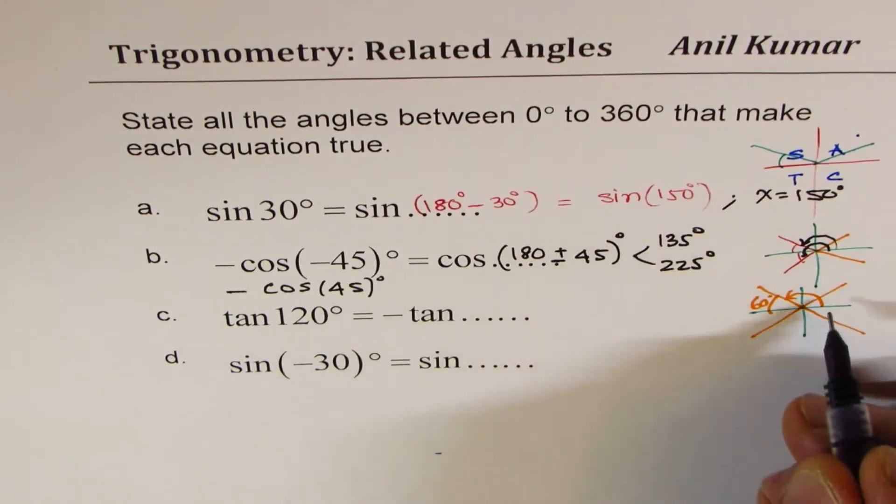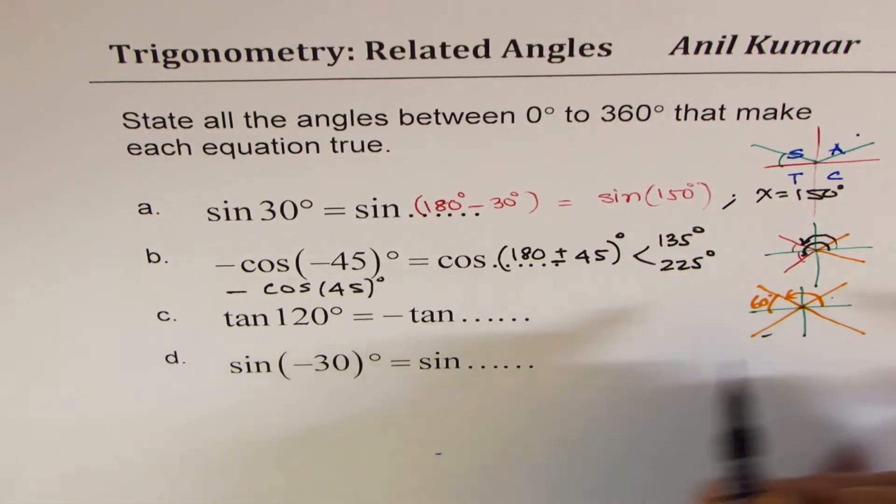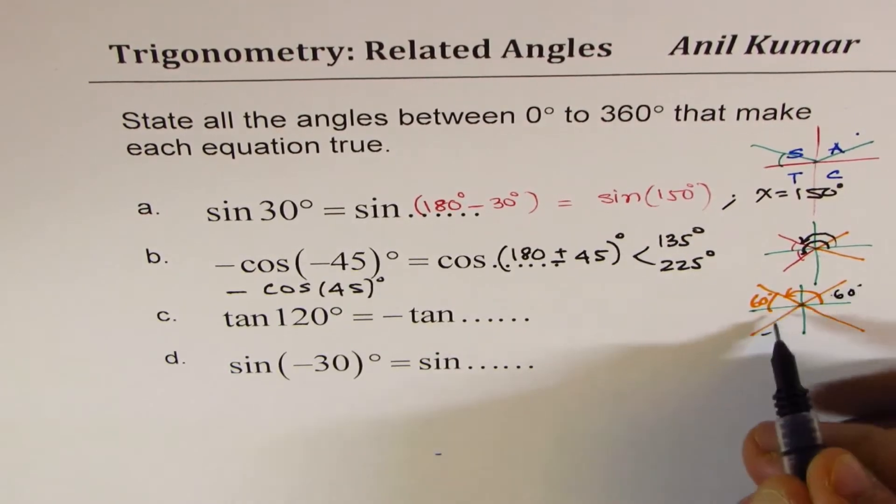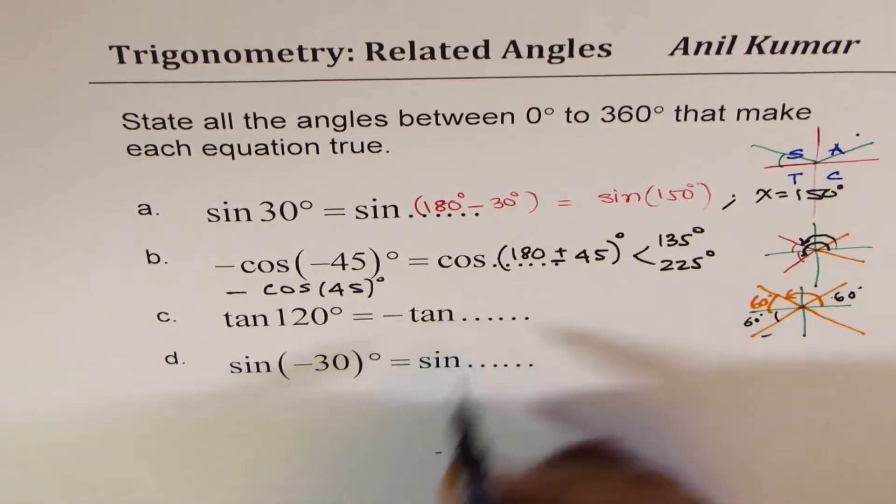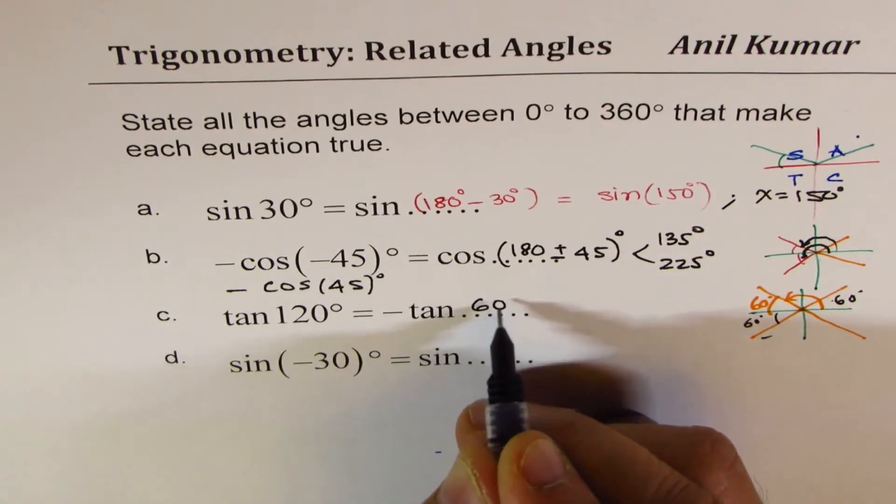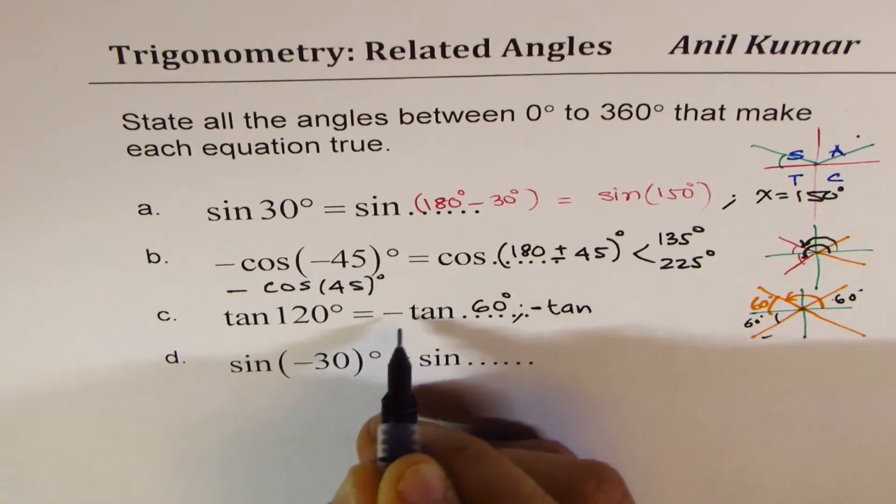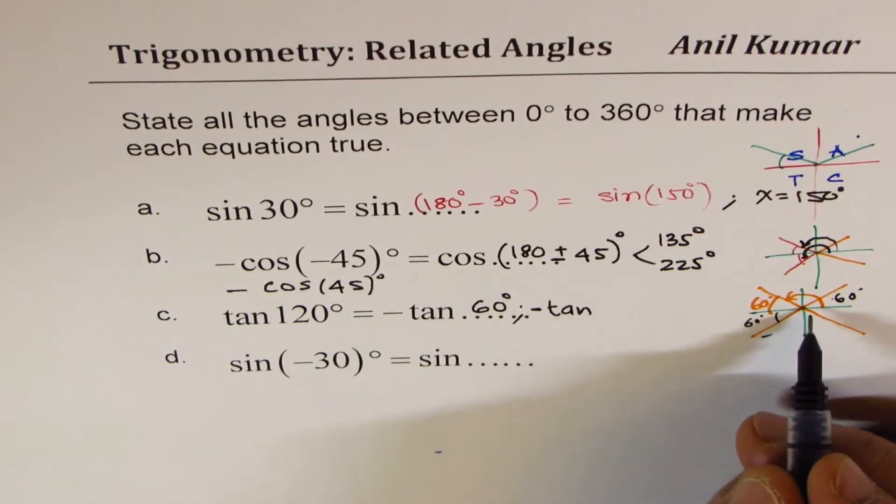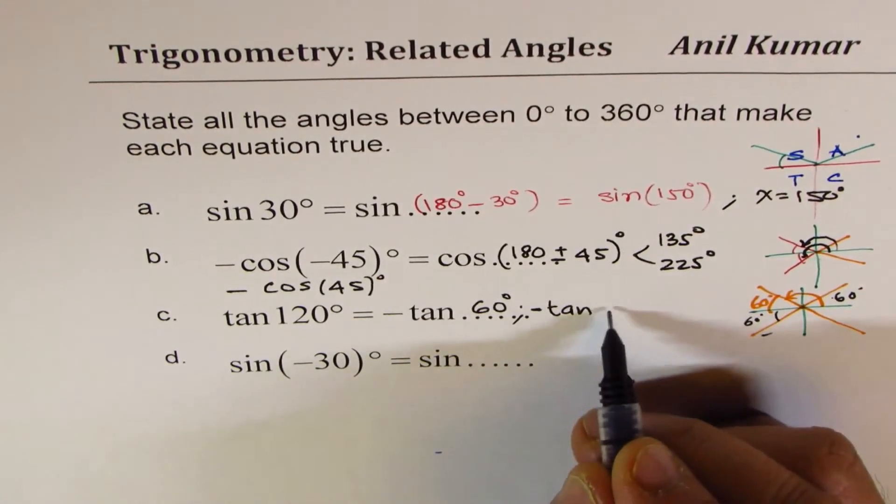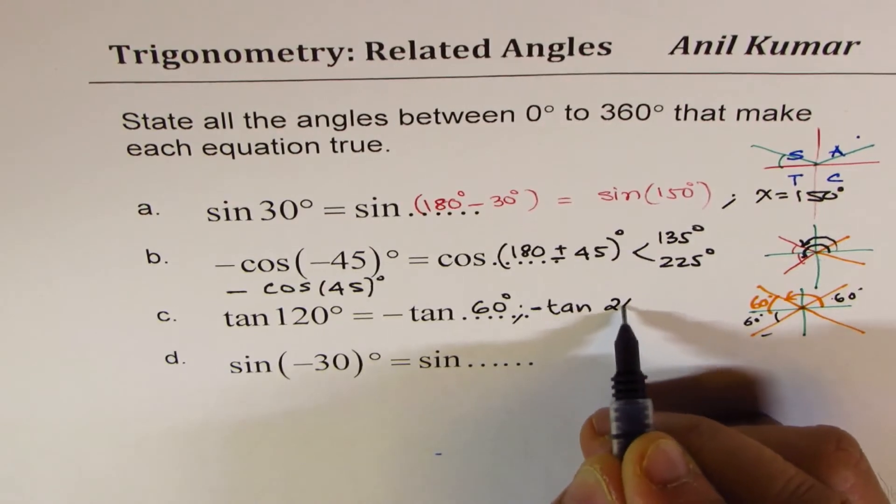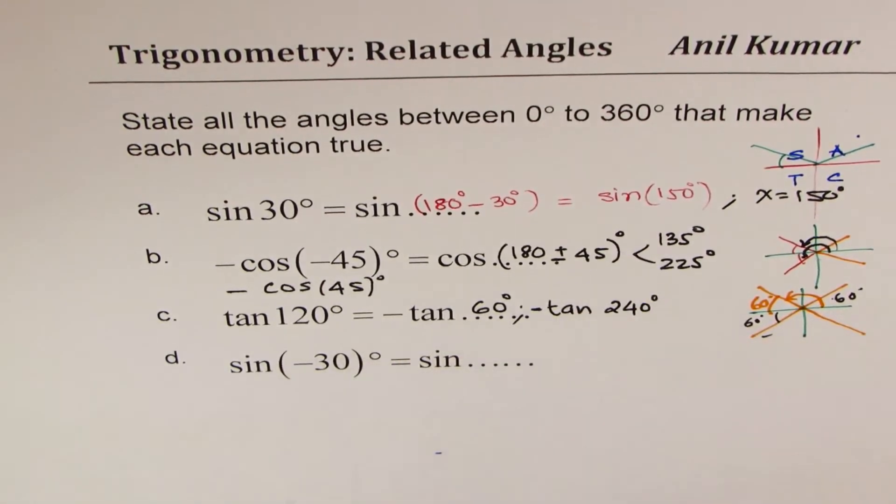Tan is positive in quadrant 1 and 3, with acute angle of 60 degrees in both these quadrants. What angles do you get? So if I write 1 as 60 degrees, the other one, I have to write minus because of this, will be 180 plus 60. 180 plus 60 is 240 degrees. So these are the two answers.